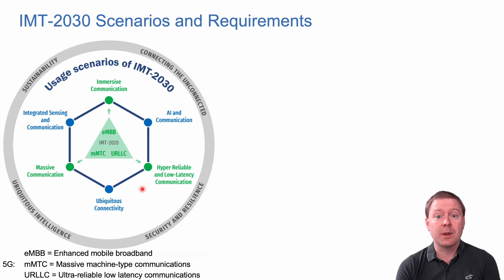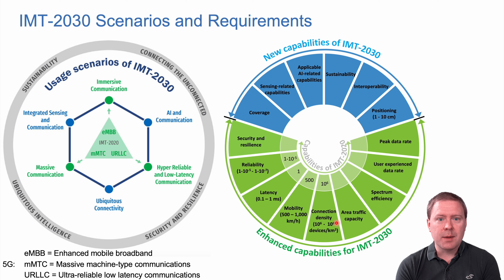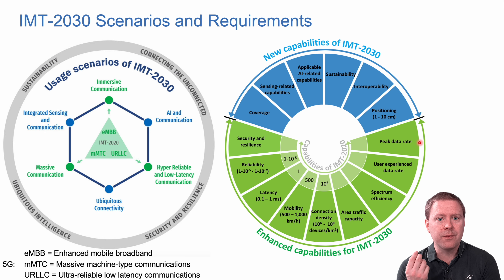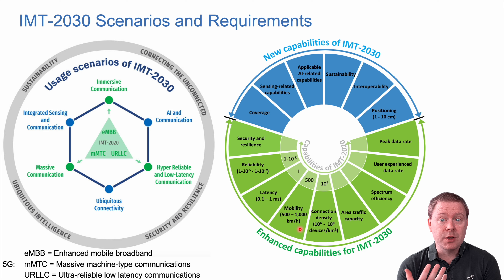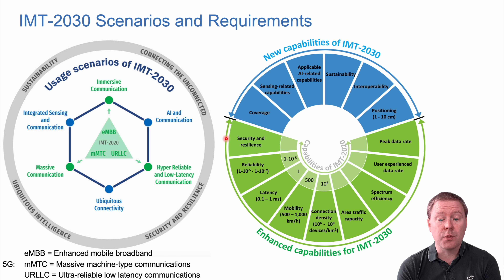The IMT-2030 requirements will be created to enable these usage scenarios and will contain a number of capabilities. Some are existing capabilities with larger and tougher requirements: peak data rate, typical user experience data rates, spectrum efficiency — how much data we can transfer per hertz of bandwidth — area traffic capacity, how many devices can be connected per square kilometer, the highest speed at which a user can move while still connected, latency — the delay from request to data delivery — reliability in decoding data correctly, and measurable targets for security and resilience.